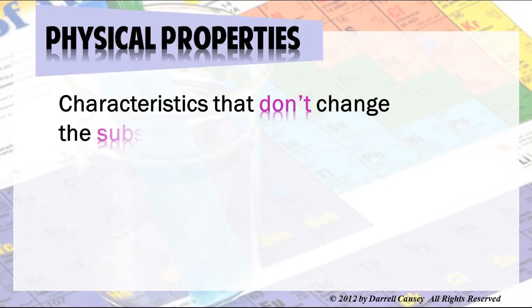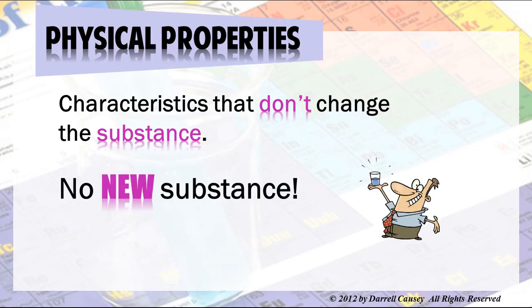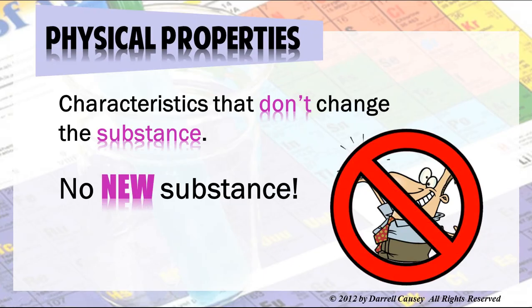Physical properties are characteristics that don't change the substance. These are properties that involve no new substance. The substance doesn't change, such as tearing paper or cutting a board in half. That's just a change in their shape or structure, but you still have paper and you still have wood. You can even dissolve sugar in water and you still have sugar and you still have water — you've just changed their form. There's no new substance.